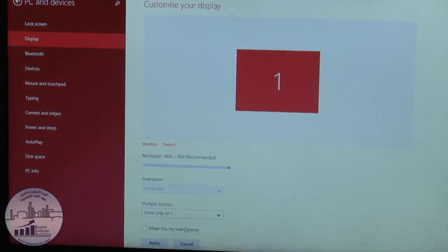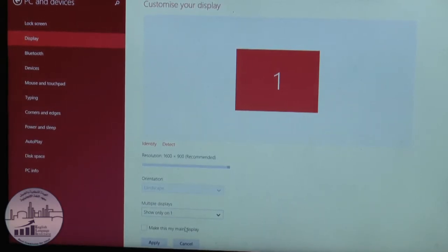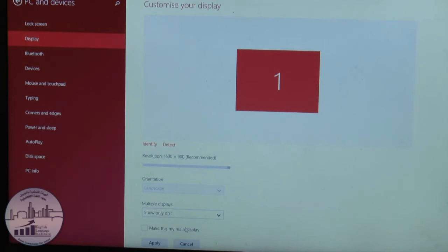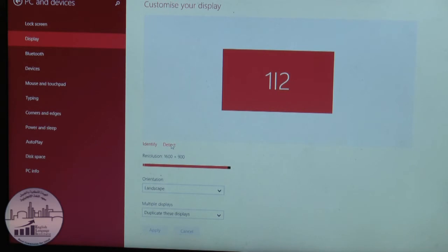Here we are in PC and devices, customize your display. At the moment, I've only got the picture on my laptop. If I press detect, there we go, and I can see on the screen the picture's come up again. Resolution, landscape, duplicate these displays, press the apply button, and we're good to go.